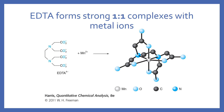In the Y4- form, we have a strong one-to-one complex with metal ions. The six binding sites for EDTA from that hexaprotic acid portion are the two nitrogens and the four acetic acid carboxylate groups — two nitrogens and four carboxylates.